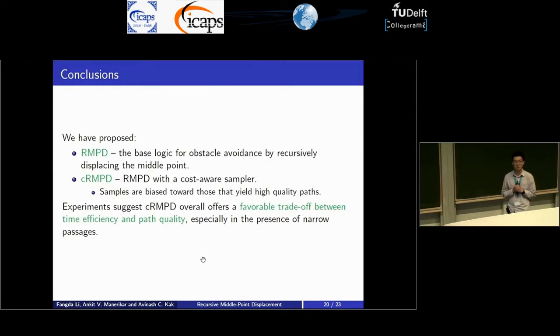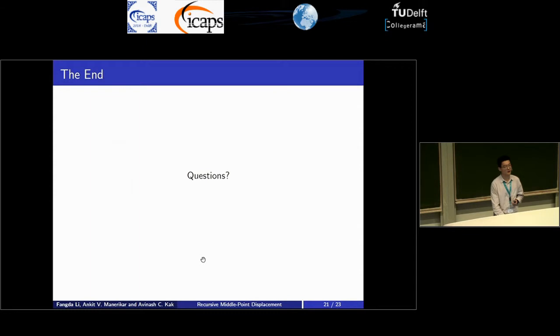In conclusion, in this talk we have proposed a basic logic for path planning or collision avoidance using divide and conquer. We further introduced a cost-aware modification to the logic in which the sampling distribution is iteratively biased toward better regions. Experiments suggest that our algorithm was able to achieve a more favorable trade-off in robustness and quality of the path, especially so in the presence of narrow passages. That's it.